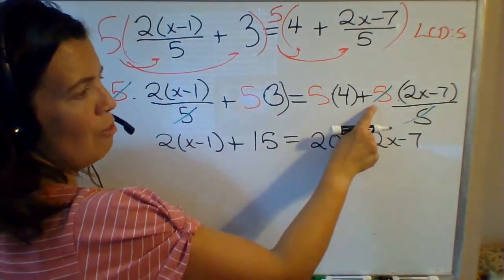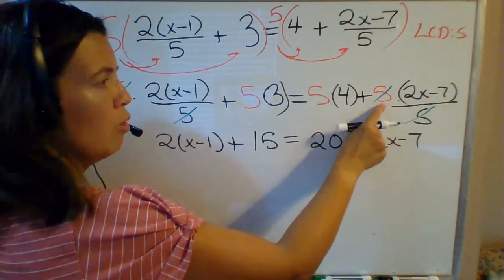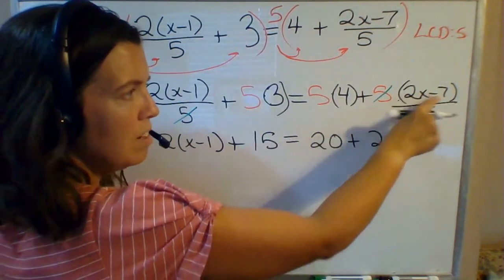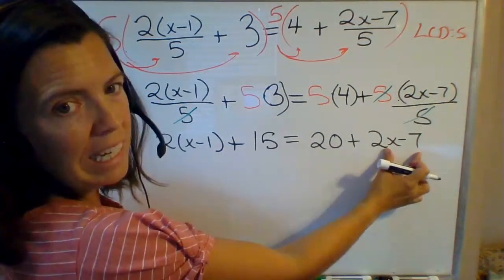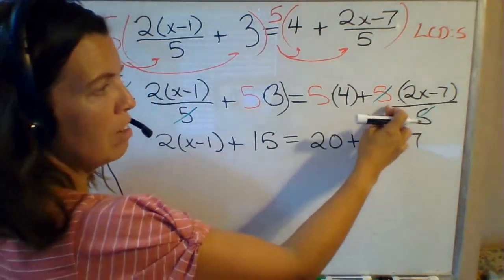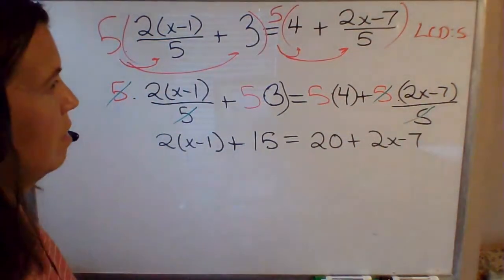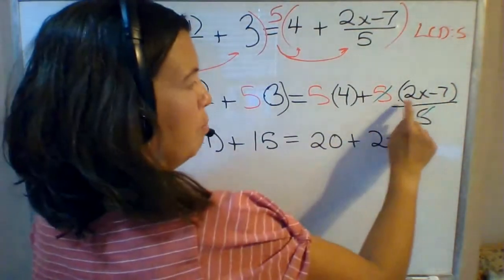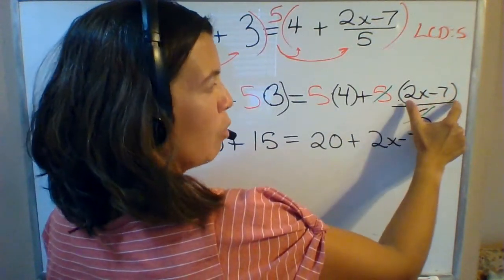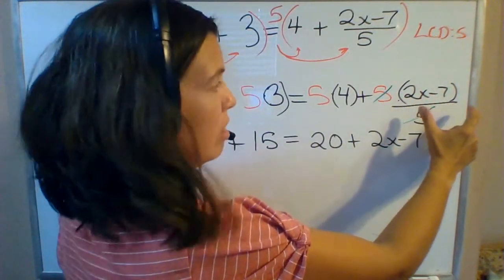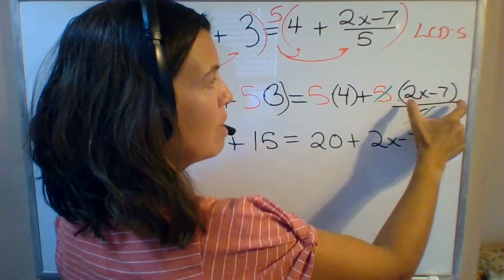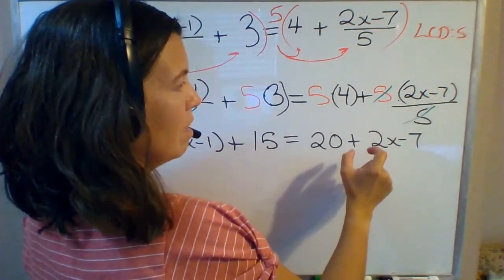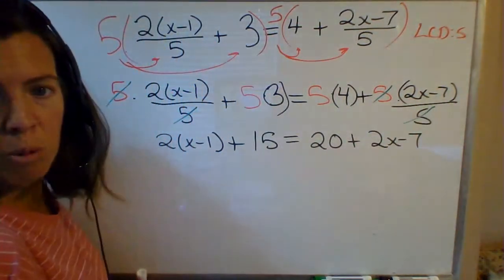Since the coefficient now when I canceled the 5 became 1, it's 1 times that 2x minus 7. So I don't really need the parentheses there anymore because the coefficient is 1. Previously I had 5 times that quantity so I needed parentheses around it to remind myself this is 5 times that entire quantity. But once it canceled I don't really need the parentheses anymore.